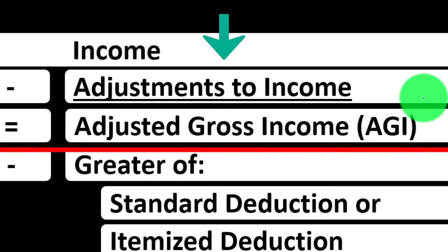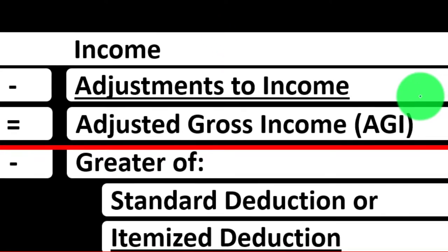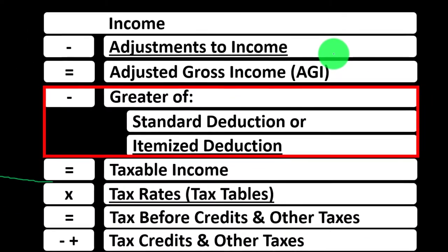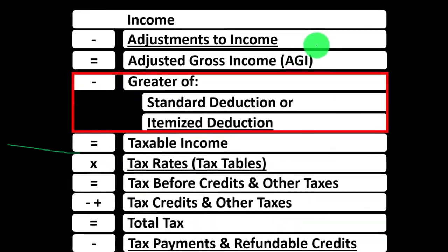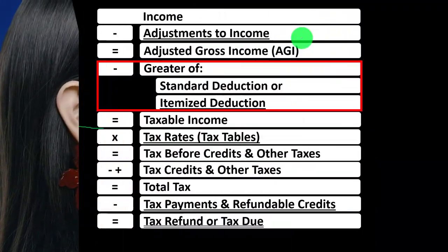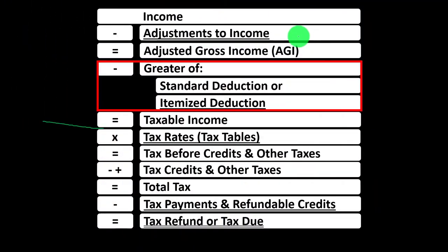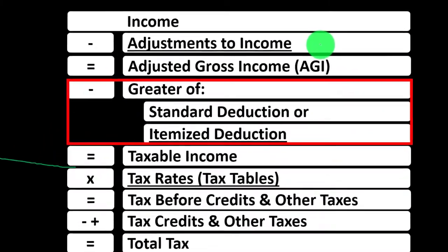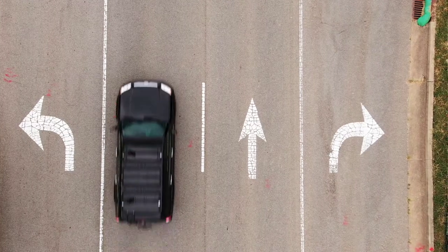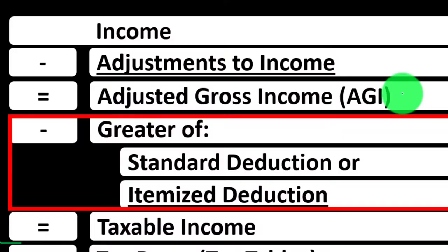So you might call it an adjustment to income — a lowering of income, like a reversal of income, like a contra income account, as opposed to a deduction. But in essence, with regards to the decrease of the line item, it's going to do the same thing. A deduction — whether you call it a deduction or an adjustment to income — is going to lower basically the bottom line, the net income, getting us to the adjusted gross income.